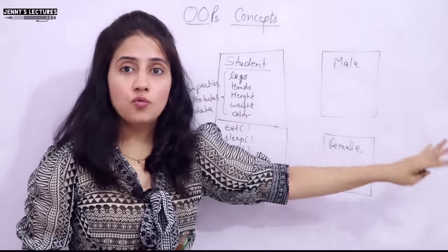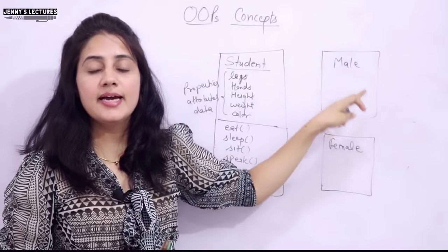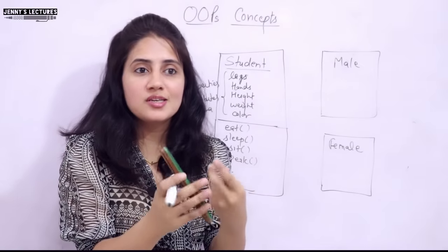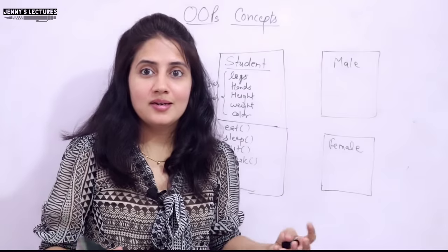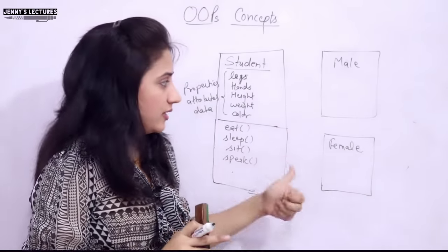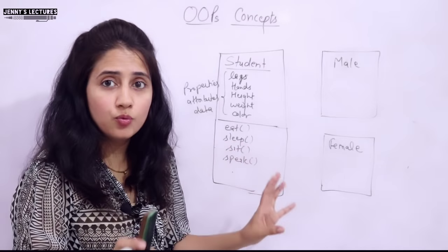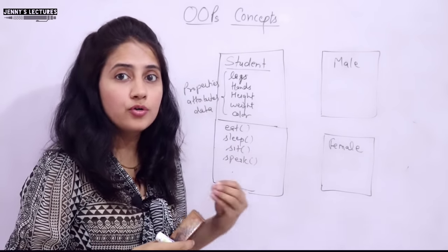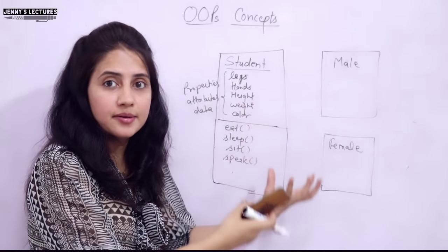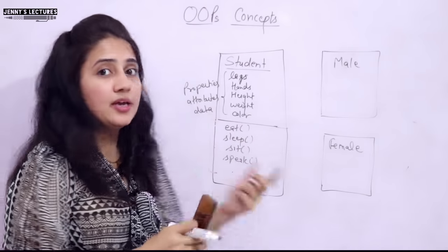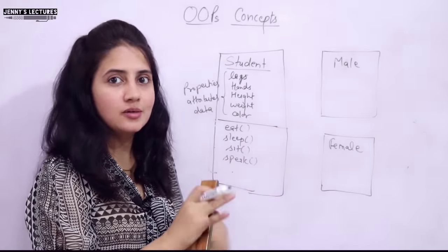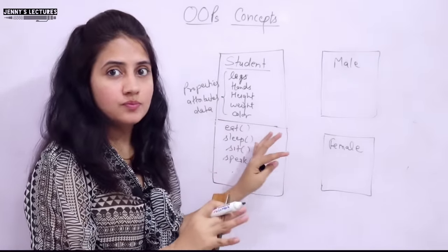An object is a real-world entity — Rahul has physical existence. A class is just a logical thing, just a definition, just a blueprint. No memory allocation is done when you define a class because it's just a logical thing, not physical. An object is a physical thing. We can access the properties and functions of a class using objects — or instances — of that class. Rahul is an object of the male class, so using Rahul we can access those properties and functions.